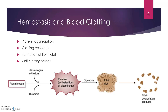Hemostasis and blood clotting: we have to worry about platelet aggregation. Plasminogen activates and progresses through a chain that causes a fibrin clot. But we also have to think about when to stop that fibrin clot — otherwise we'd just be one big gelatinous mess. So we do have anti-clotting forces to break it up and prevent the body from clotting everywhere.